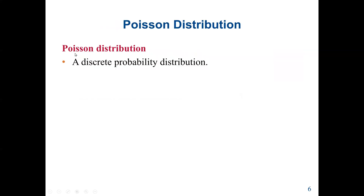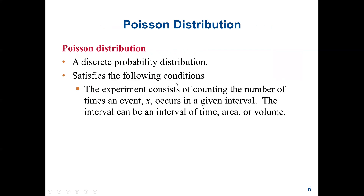Next, we cover Poisson distribution, which is also a discrete probability distribution. It satisfies the following conditions: the experiment consists of counting the number of times an event occurs in a given interval. The key point is that this is based on a given interval — both binomial and geometric are not based on a given interval. The interval can be a time, an area, a volume, etc.